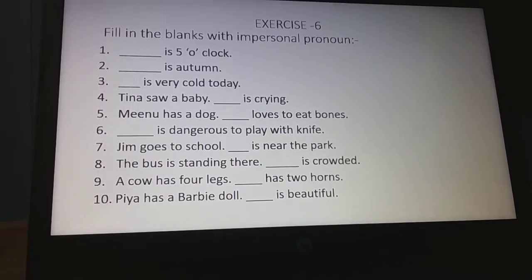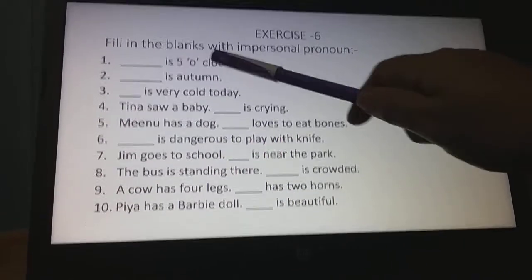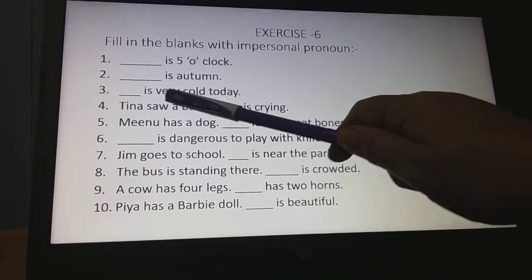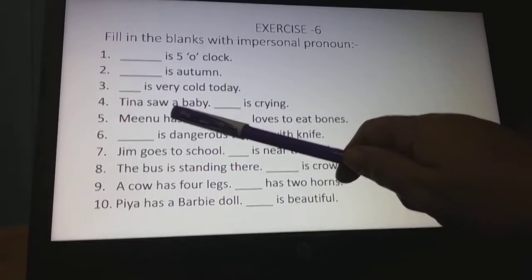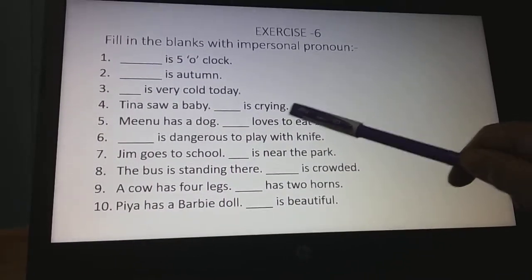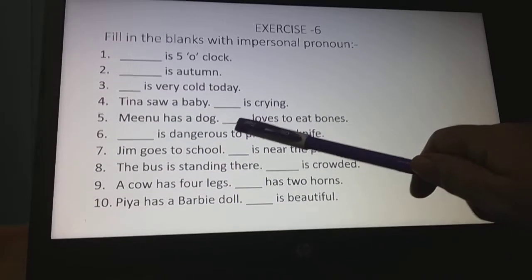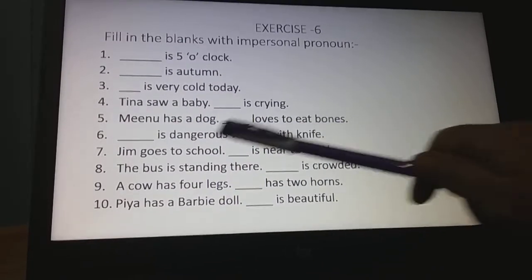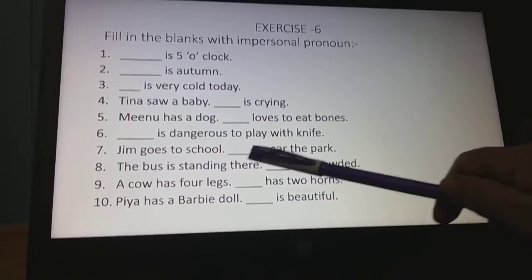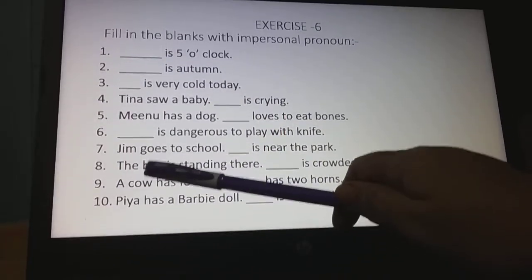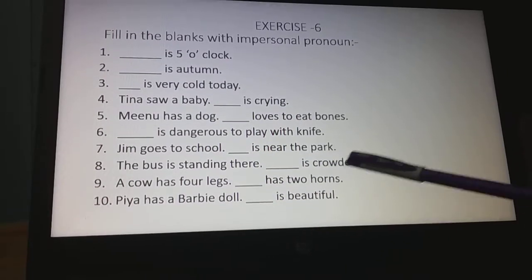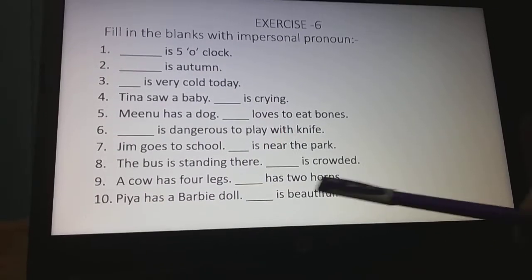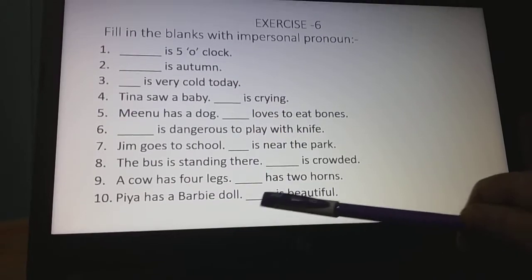Number one: ___ is five o'clock. Number two: ___ is autumn. Number three: ___ is very cold today. Number four: Tina saw a baby, ___ is crying. Number five: Minu has a dog, ___ loves to eat bones. Number six: ___ is dangerous to play with a knife. Number seven: Gym goes to school, ___ is near the park. Number eight: The bus is standing there, ___ is crowded. Number nine: A cow has four legs, ___ has two horns. Number ten: Pia has a bobby doll, ___ is beautiful.